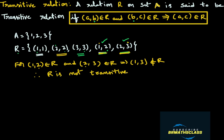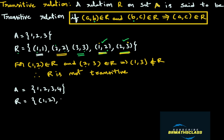I hope you are understanding. Now we will try to understand transitive relation with one more example. This example is very, very important. I will take set A equal to {1, 2, 3, 4}. I will take a relation on this set like this: ordered pair (1,2), ordered pair (3,4), ordered pair (1,4). Clearly it is a relation on A. Now we need to check whether it is a transitive relation or not.